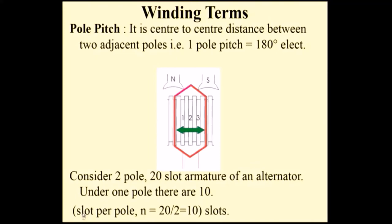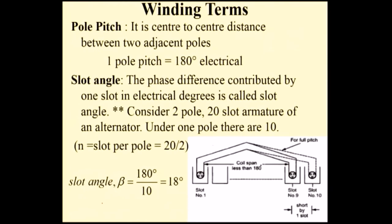Winding terms - an important concept is pole pitch. It is the center to center distance between two adjacent poles. One pole pitch equals 180 degrees electrical.